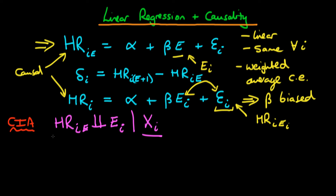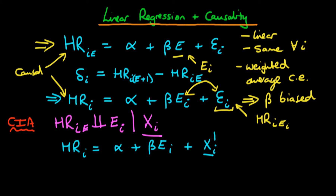We can use the conditional independence assumption by including the covariate vector in our regression. So we extend the equation to include X_I prime times delta plus V_I, where by construction V_I is orthogonal to X_I — in other words, the expectation of V_I given X_I equals zero.